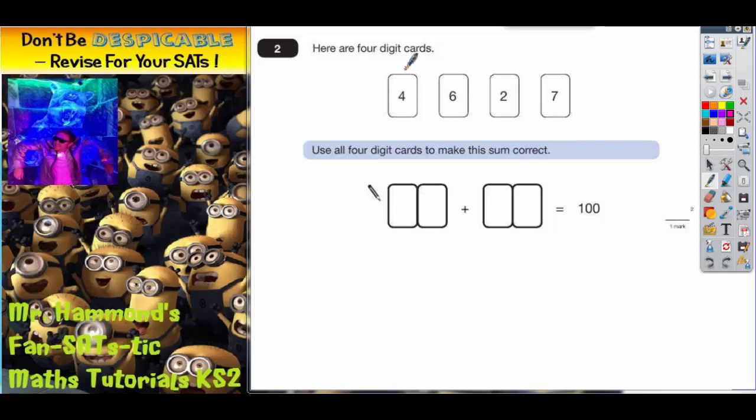Question 2. Here are four digit cards: a 4, a 6, a 2, and a 7. It says you use all four digit cards, so you've got to use them all, to make the sum correct.